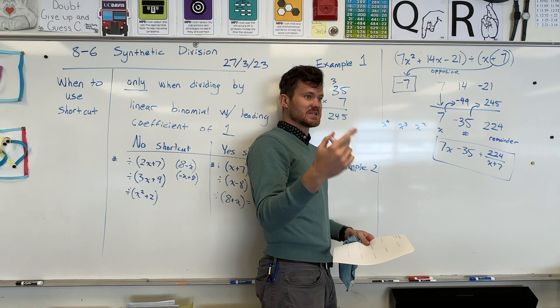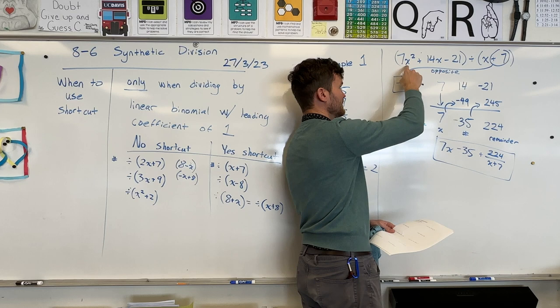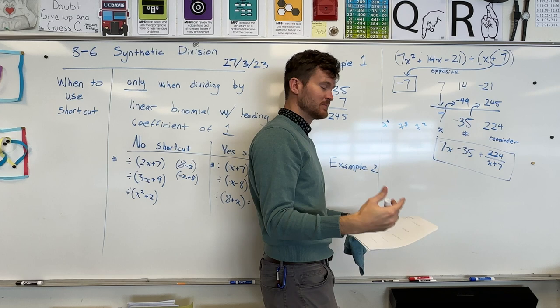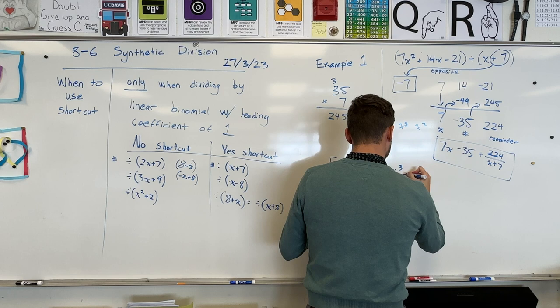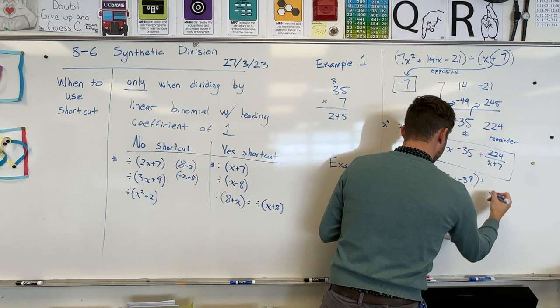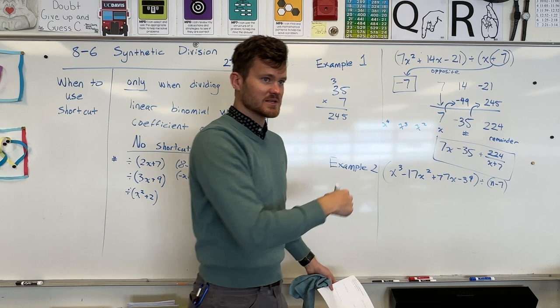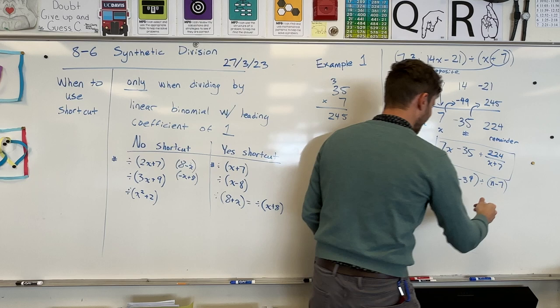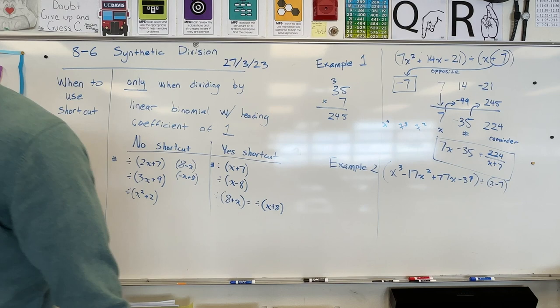Be careful that you don't skip a term. Like if I went 17x cubed and then 14x, I would have skipped my x squared — you still need those placeholders with a zero, just like our last lesson. I'm not going to give you one of those, but just be aware. Example number two: x cubed minus 17x squared plus 77x minus 39.